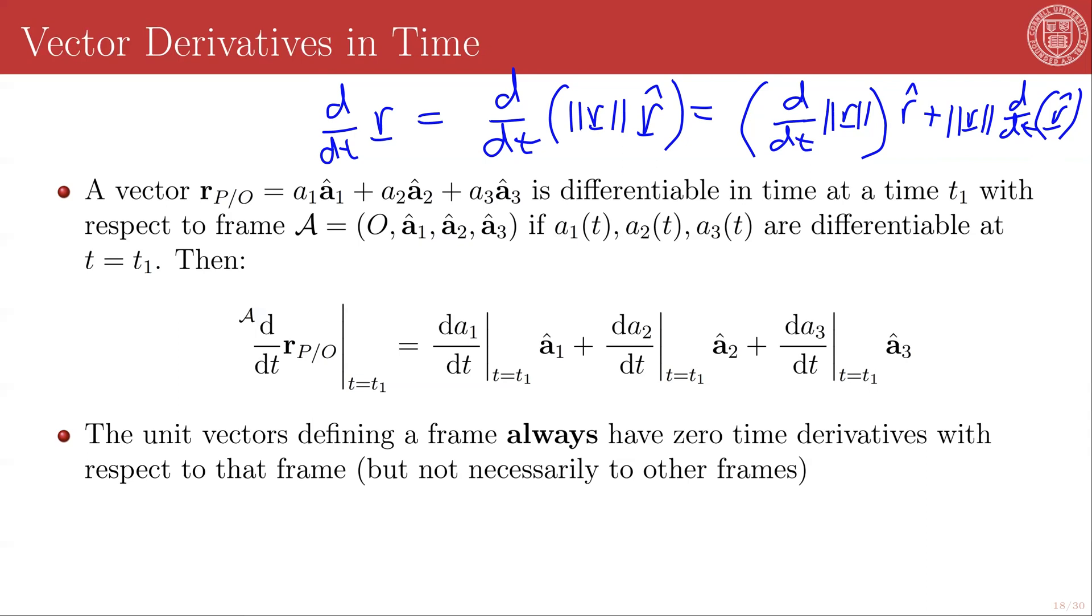And so the vector derivative of a frame, let's call it frame A, of one of the unit vectors making up that frame, will be zero. And so once we define that, then we can go ahead and take the vector derivative with respect to that frame, which will just be three scalar derivatives in the three unit directions.